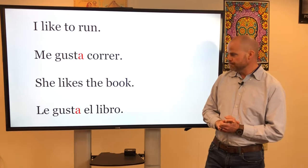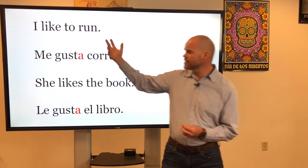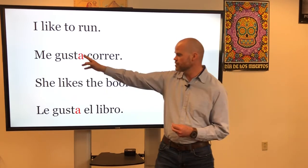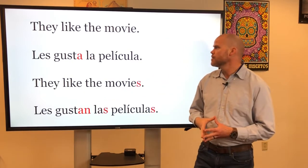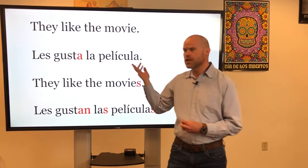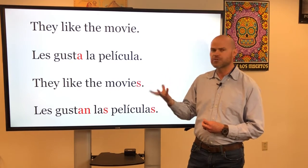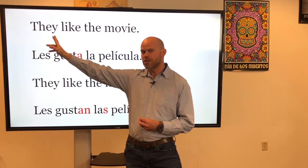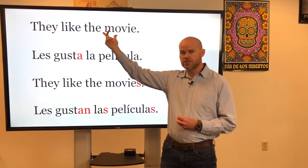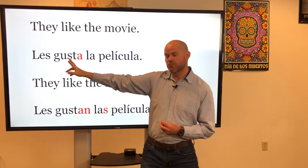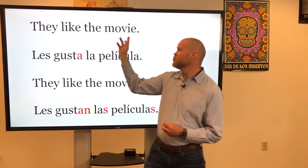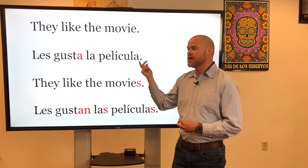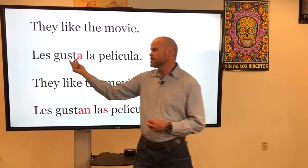Here are some other examples. I like to run — me gusta correr. She likes the book — le gusta el libro. Notice gustar is going to be the same. They like the movie — les gusta la película. A very common mistake among beginners is when they see 'they,' people automatically want to put gustan. But you have to ask yourself: if the thing that you like is singular, the form of gustar has to be singular as well. So they like the movie is not gustan — it's gusta. What changes is les. Les gusta la película — the movie pleases them.